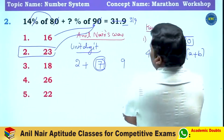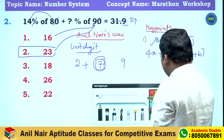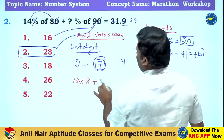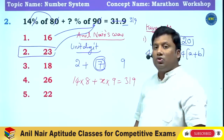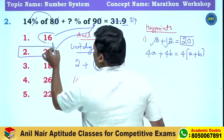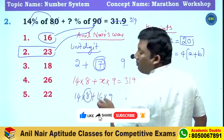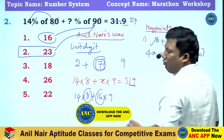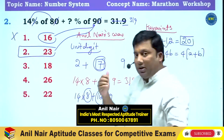Now consider another important variation: suppose the question is 14 percentage of 80 plus x percentage of 90 equivalent to 319. Think logically. If x is 16, then we get 14 into 8 plus 16 into 9. Both are divisible by 4, so the answer must be divisible by 4. But 319 is not divisible by 4, so the first option is eliminated based on the divisibility key point.